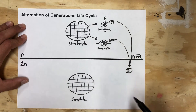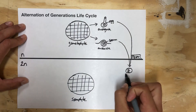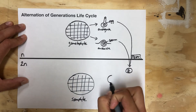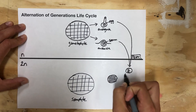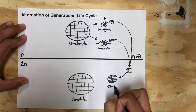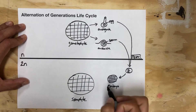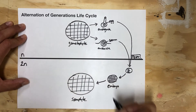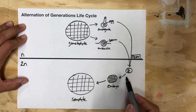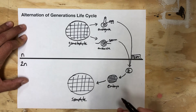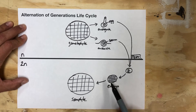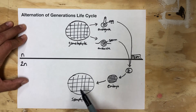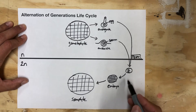The next step is for the zygote to divide and grow, going from a zygote to an embryo — more than one cell but not yet the full-grown organism — and then that embryo becomes the sporophyte. All of the divisions from zygote to sporophyte happen via mitosis, because we're not changing ploidy — we're going from diploid cells to more diploid cells.